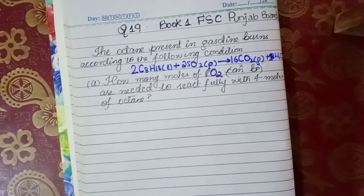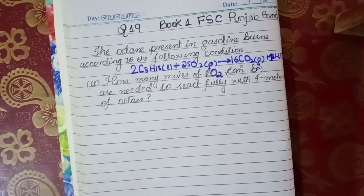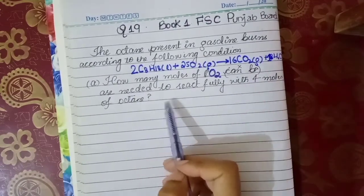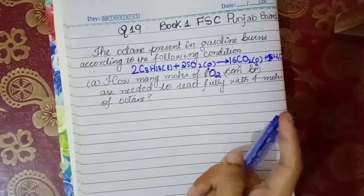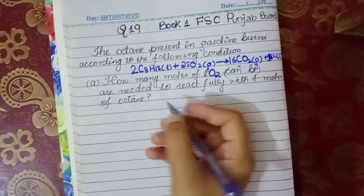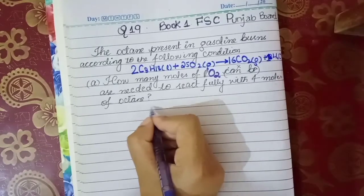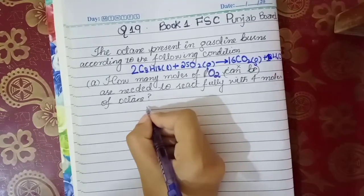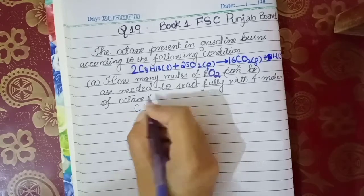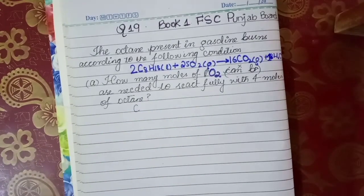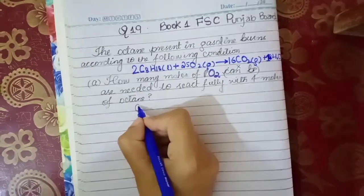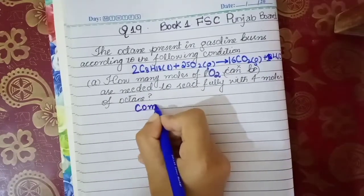In this question we are given the following equation where octane present in gasoline burns according to this condition. In part A we are required to find moles of O₂ needed to react fully with four moles of octane. For this purpose we are going to do a comparison — the thing that is given is always written on the left side and the thing we have to find is always written on the right side. In this case we are going to write octane on the right side and O₂ on the left side.